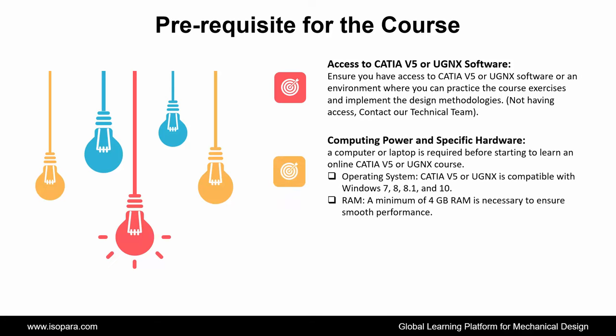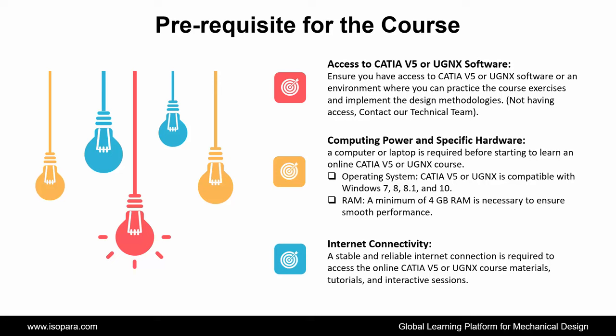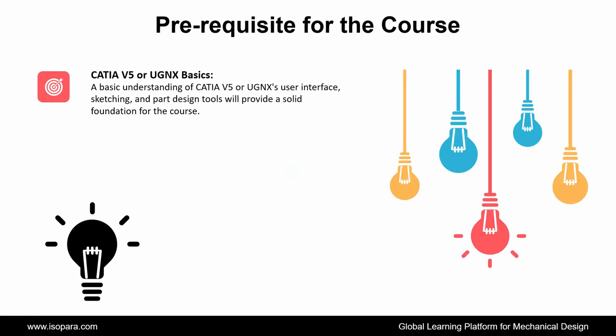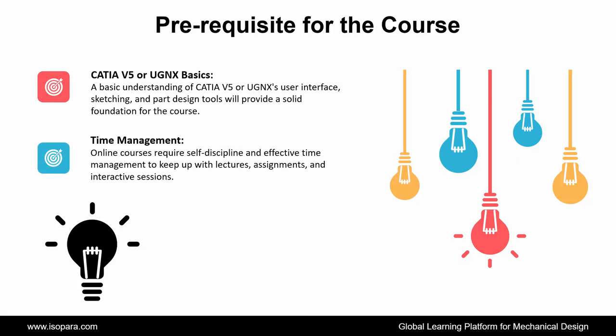Next is Computing Power and Specific Hardware — a computer or laptop is required. The operating system must be compatible with Windows 7, 8, 8.1, or 10, and a minimum of 4 GB RAM is necessary for smooth performance. Next is Internet Connectivity — a stable internet connection is required to access online course materials, tutorials, and interactive sessions. Next is CATIA or UGNX Basics — a basic understanding of the user interface, sketching, and part design tools will provide a solid foundation. And lastly, Time Management — effective time management is required to keep up with lectures, assignments, and interactive sessions.